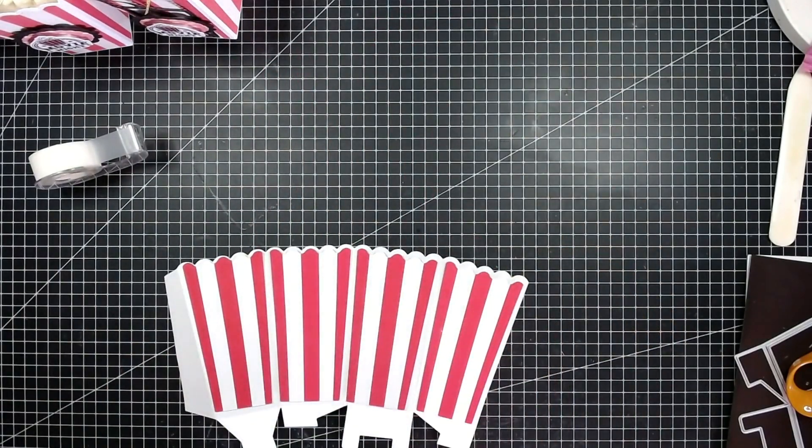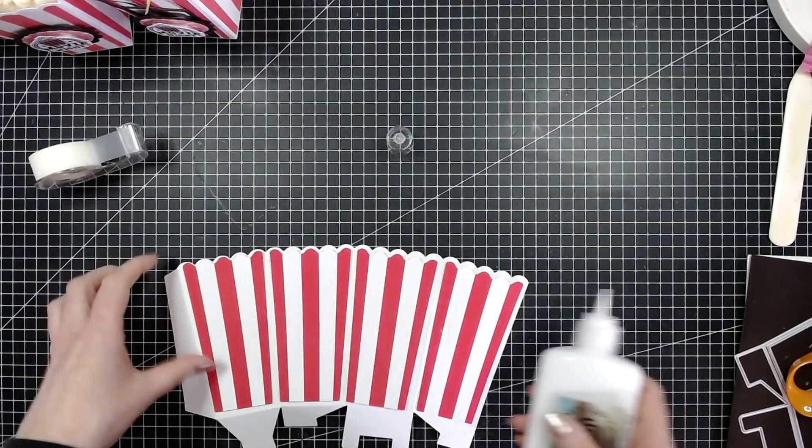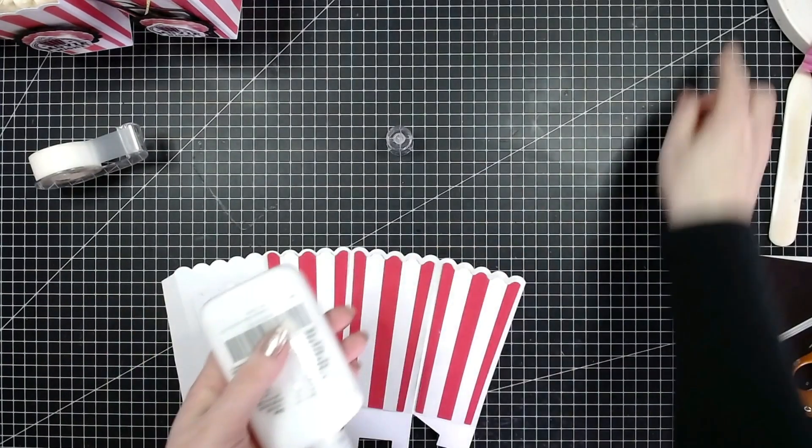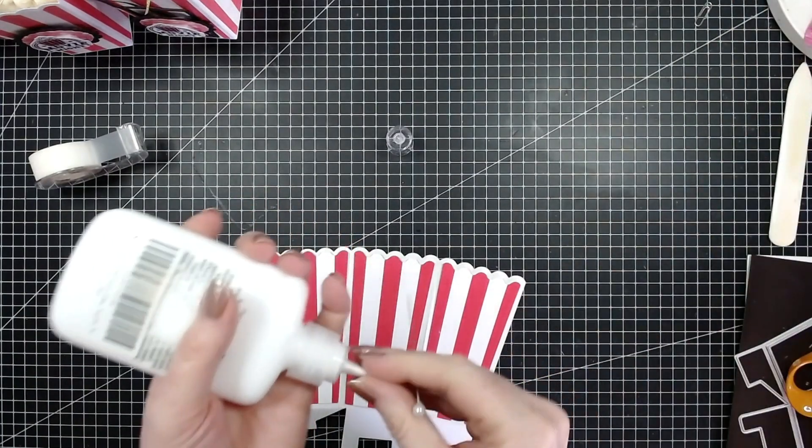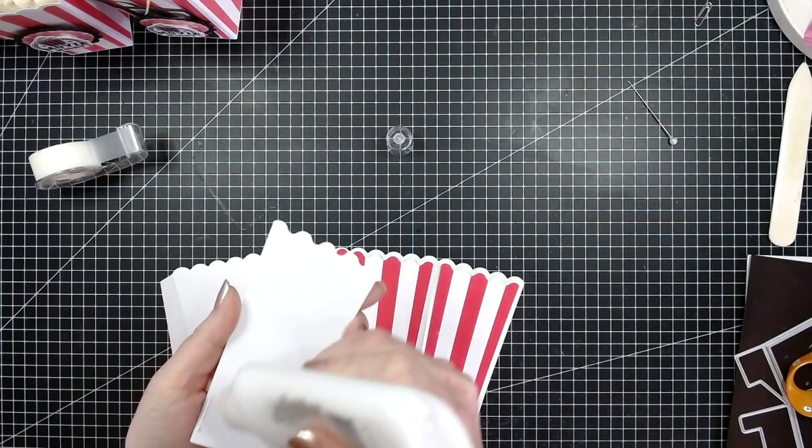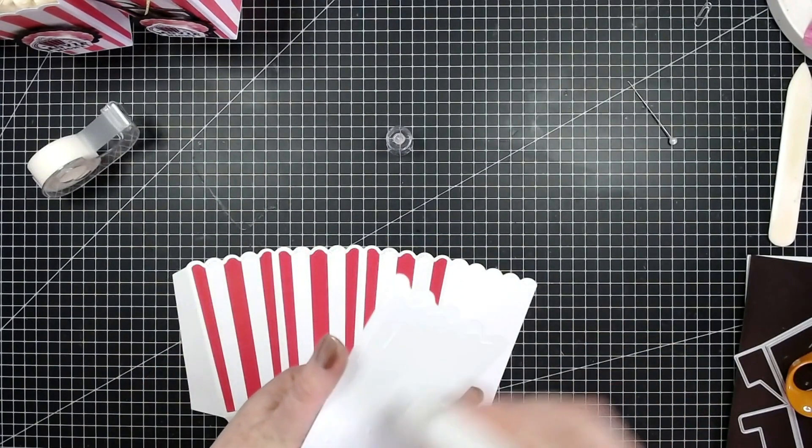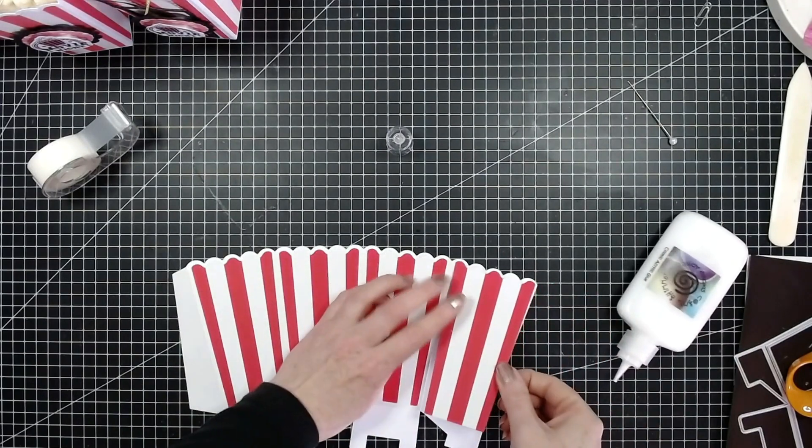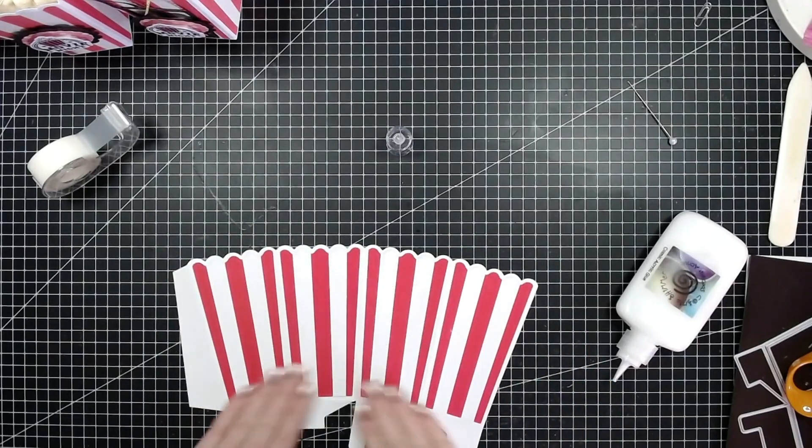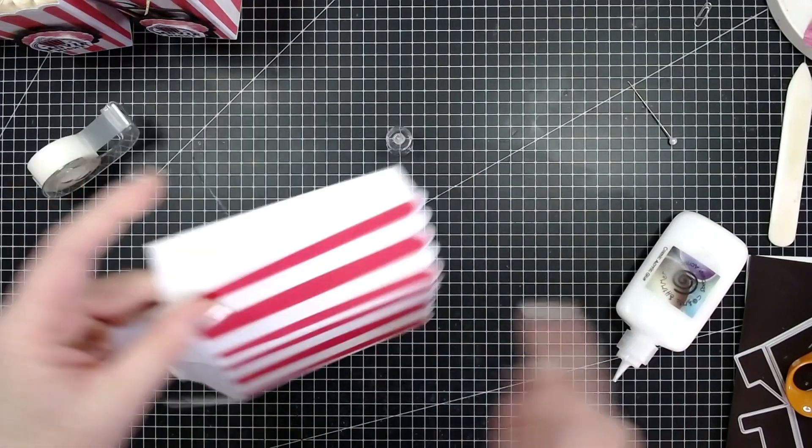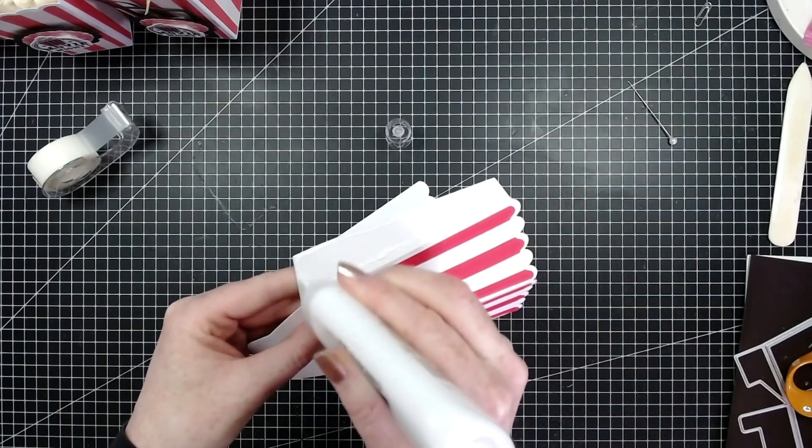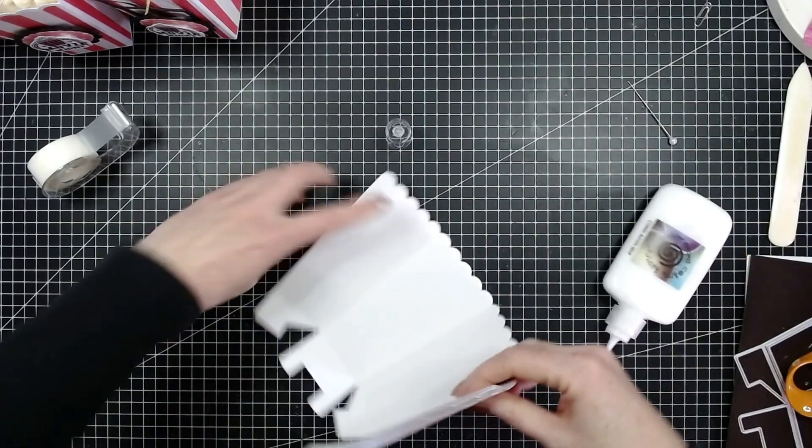Let's get them glued down. I'm going to be using Cosmic Shimmer dries clear and it dries fast. Okay, so that's all put on now, and then we'll add some glue along here going right up to the score line here, and then we can just join this together.